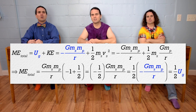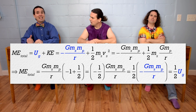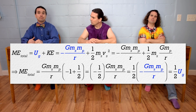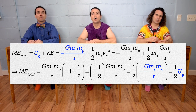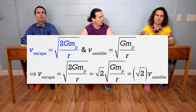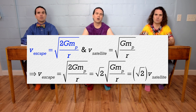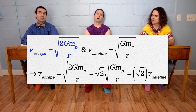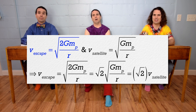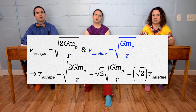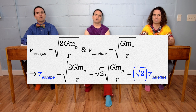I thought the total mechanical energy was negative. It is. Remember, universal gravitational potential energy is always negative. The total mechanical energy is just half that negative value. Previously we determined the escape velocity of an object from a planet to be equal to the square root of two times big G, the universal gravitational constant, times the mass of the planet, all divided by the distance between the centers of mass of the object and the planet. And we can relate that to the satellite's velocity. The escape velocity of an object equals the satellite's velocity times the square root of two.